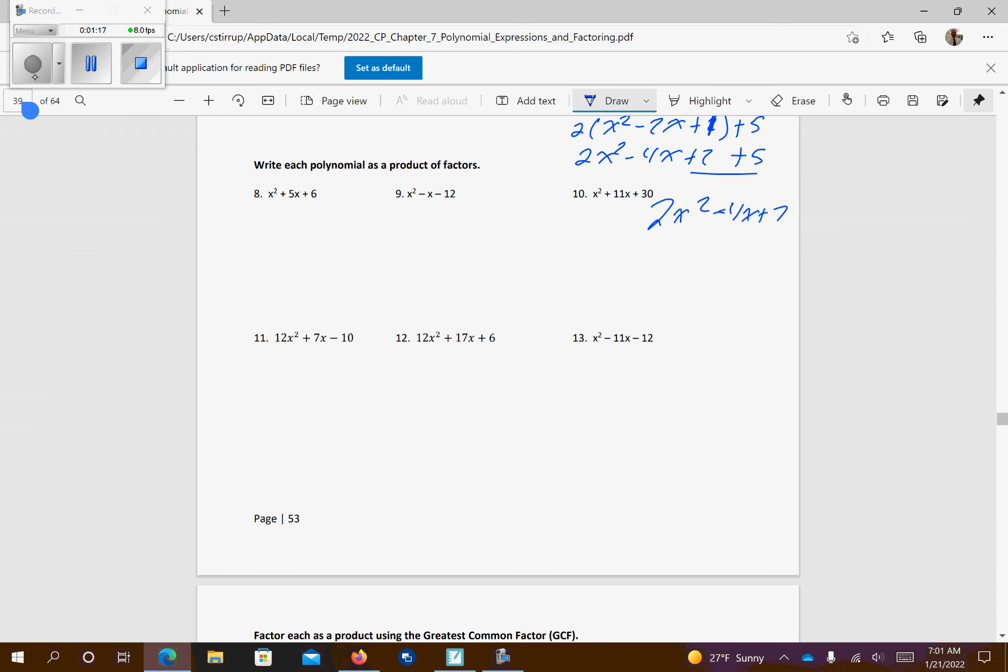Alright, we want to factor these, so we'll multiply first and last together, so I get negative 12, so I know I have alternating signs, factors of 12: 1, 12, 2, and 6, 3, and 4. If one's positive, one's negative, that add up to the negative 1, so it's going to be a negative 4 and a positive 3.